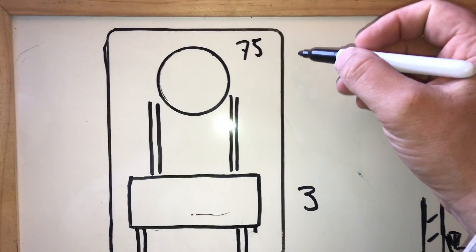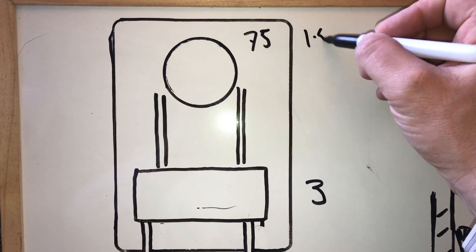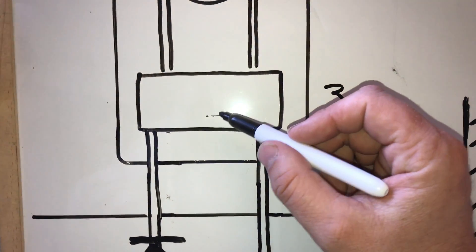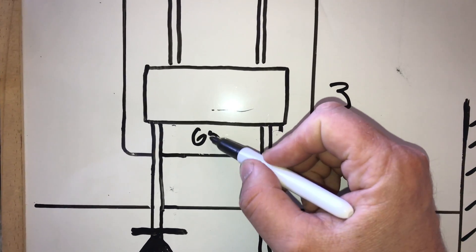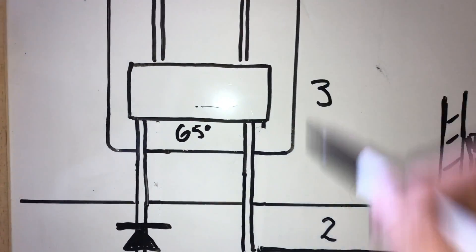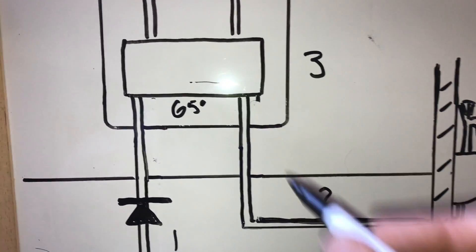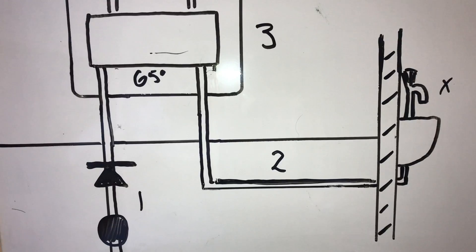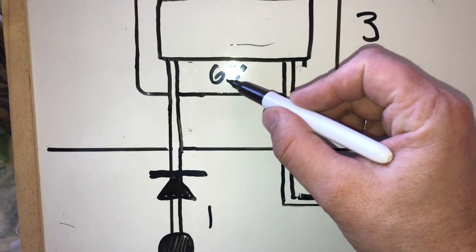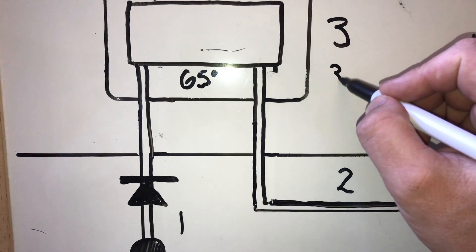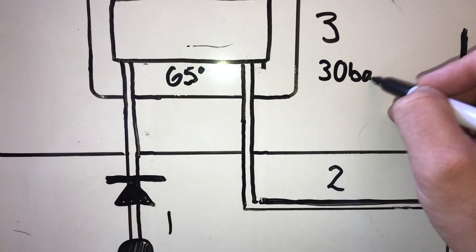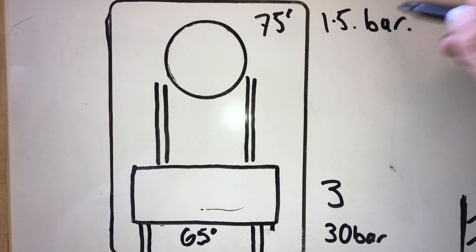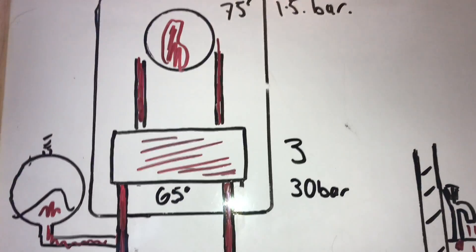So let's say, for example, with the boiler there, you got a burner. It gets to 75 degrees and that could be about 1.5 bar here. This will get to 65 degrees, and with the taps not working, the taps off, that could get to as much as 30 bar.